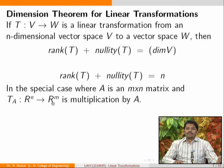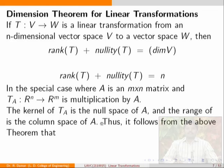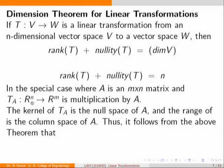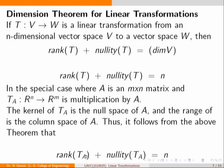For matrix transformations, the rank-nullity theorem also holds: the null space of A is the kernel of T_A, and the column space of A is the range. So rank(T_A) + nullity(T_A) = n. This is the well-known dimension theorem for linear transformations.